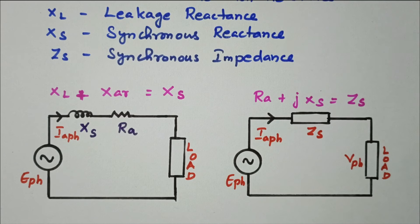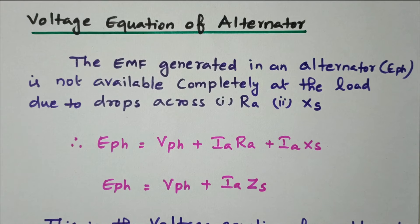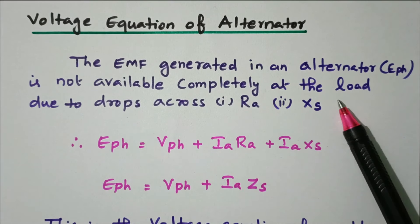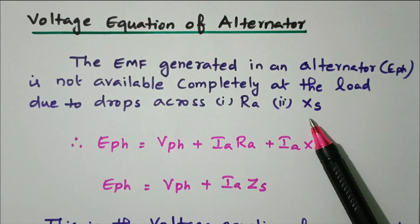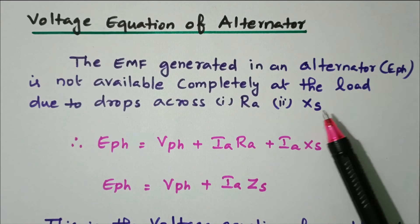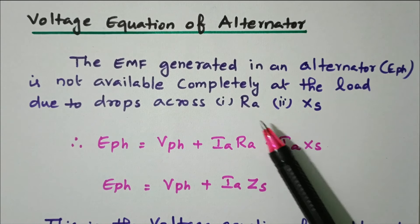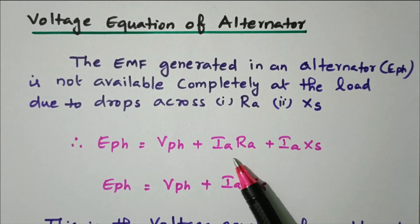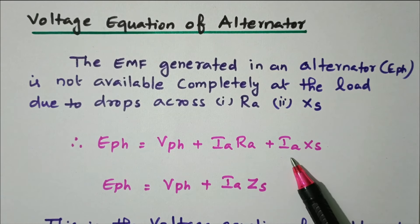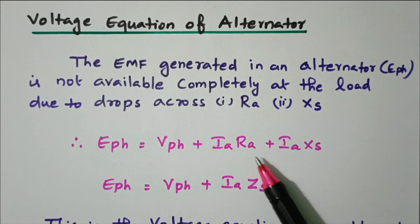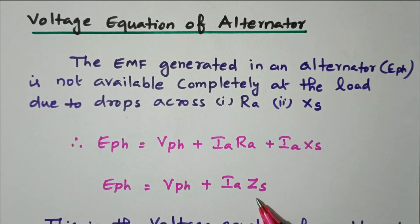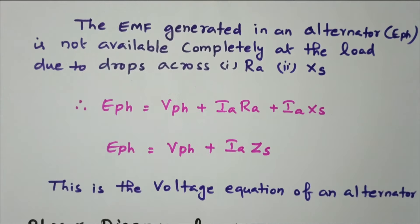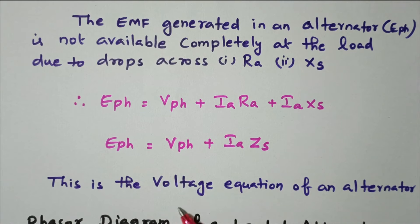The EMF generated in an alternator, E-phase, is not available completely at the load due to the drop across RA and XS. So E-phase is not exactly equal to V-phase; some amount is dropped across RA and XS. Therefore, E-phase equals V-phase plus the resistive drop IA·RA plus the reactive drop IA·XS. RA plus jXS is nothing but ZS, the synchronous impedance. This is the final voltage equation of the alternator.